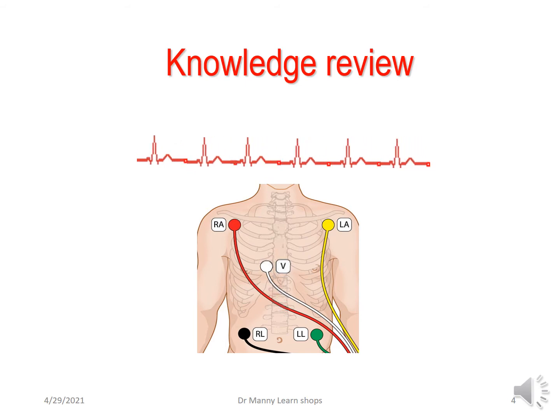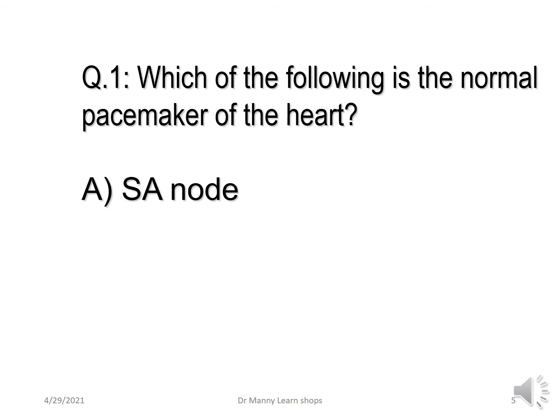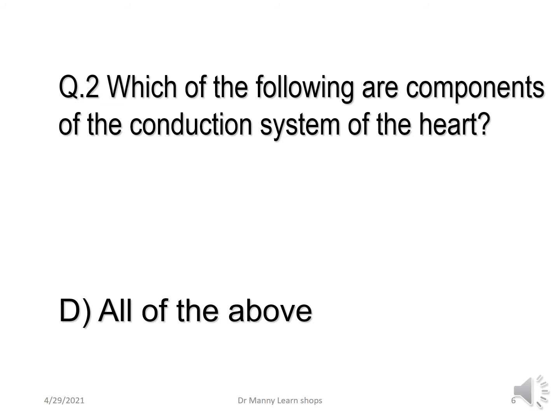Let's review the knowledge again. Which of the following is the normal pacemaker of the heart? The correct answer is A. Which of the following are components of the conduction system of the heart? The correct answer is all of the above.